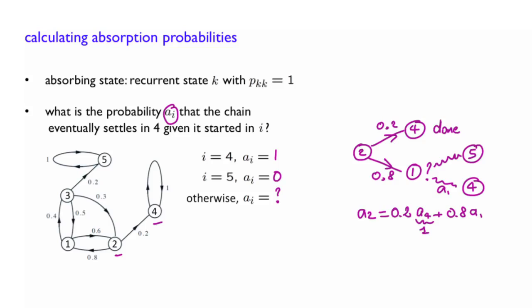Now of course you can do the same thing for the other states. For example, if you started from 1, what can happen next? Well, you can go to 2 with a probability 0.6. Once you are in 2, you are asking yourself what is the probability of reaching 4. Well, by definition, it's a2. Or from 1, you go to 3 with a probability 0.4. And given that you have done that, what is the probability that eventually you reach 4? It's a3.